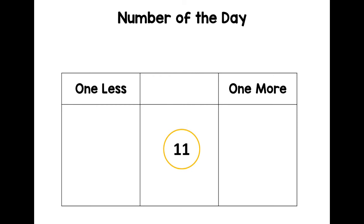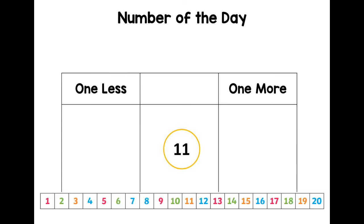What is one less and one more than 11? Let's use a number track. If you think of the number 11, here it is. If you do a jump down the number track, you get one less, and up you get one more.